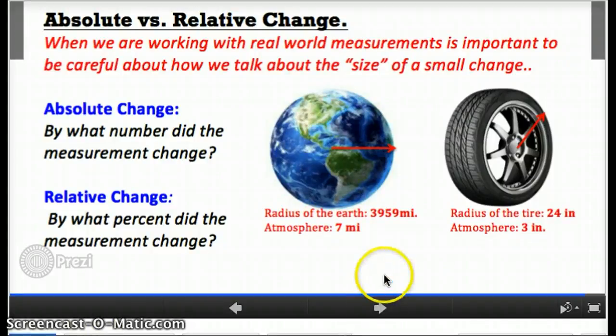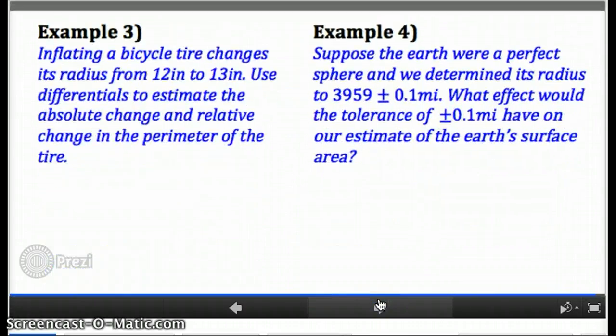We'll end today's video with two final examples, word problem examples. Example number three, inflating a bicycle tire changes its radius from 12 inches to 13 inches. Use differentials to estimate the absolute change and relative change in the perimeter of the tire.